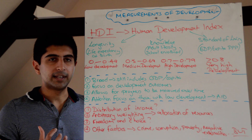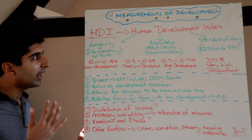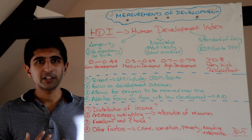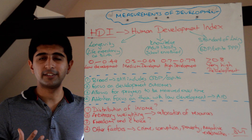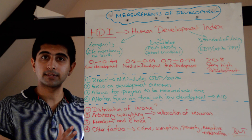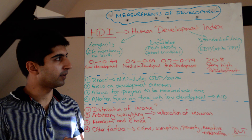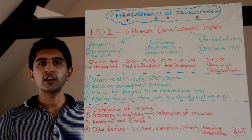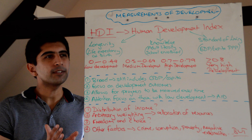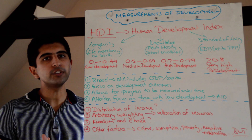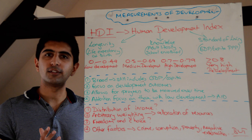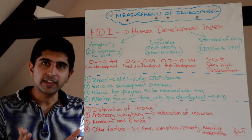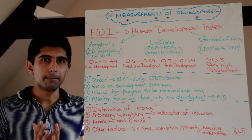Let's look at the Human Development Index. It's an index that was developed by Amartya Sen and another Pakistani-based economist. What they tried to do was include as many important indicators of development as possible within one measure.